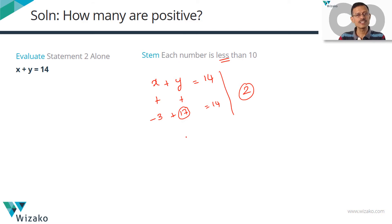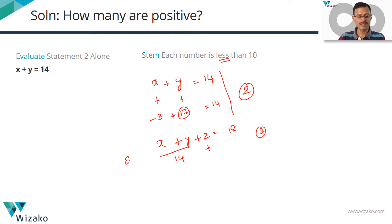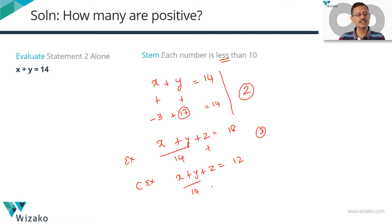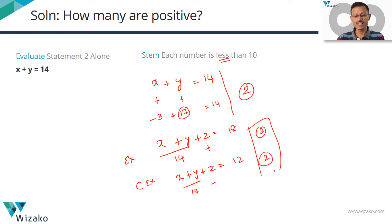The only thing left to determine is whether z is also positive. If x plus y plus z equals 18, then with x plus y equal to 14, z would be positive — all three are positive. But consider a counterexample: x plus y plus z could equal 12. With x plus y equal to 14, z would be minus 2 — a negative number. In that case, only two numbers are positive. So we're getting more than one answer: it could be two or three.